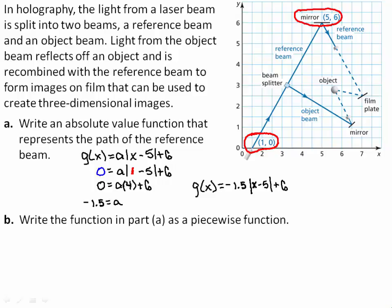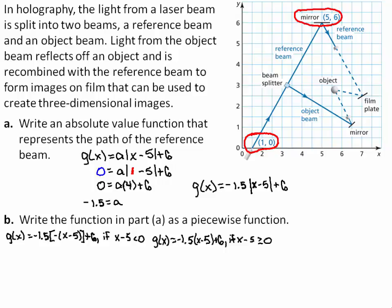Part B: Write the function in Part A as a piecewise function. The function is g equals negative 1.5 times the negative of the quantity x minus 5, plus 6 if x minus 5 is less than 0; and g equals negative 1.5 times the quantity x minus 5, plus 6 if x minus 5 is greater than or equal to 0.